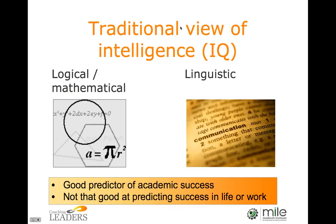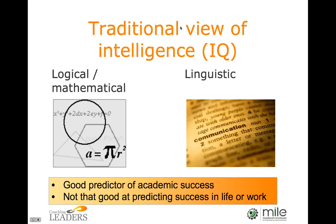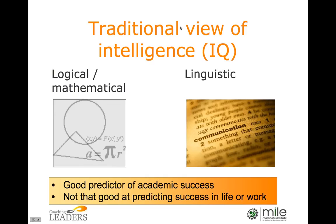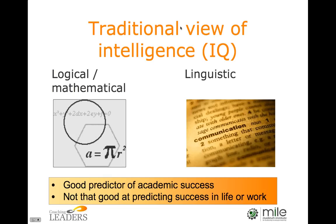These are the skills that the education system in the Western world has traditionally selected for. A high IQ score is a good predictor of academic success and good grades at school and university, but it's not such a good predictor of success in life or at work. Have you ever worked with somebody who's intellectually very bright but insecure, or who belittles the people that work for them — someone who is a high performer themselves but a drag on the performance of their team because other people can't stand working with them?